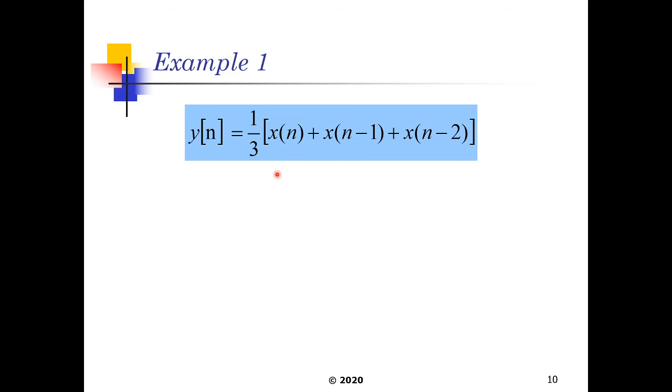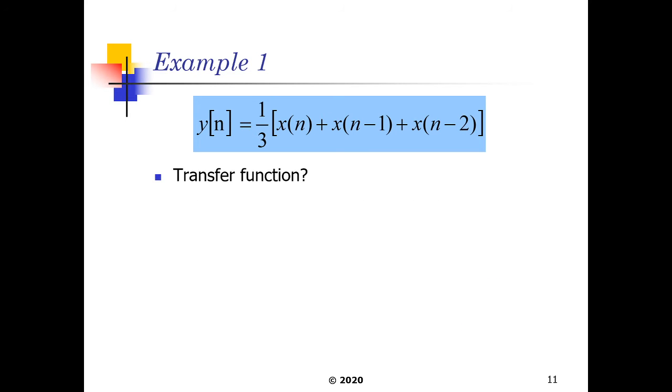The next question we want to ask is for this moving average filter, what is going to be the frequency response? So the transfer function for this moving average filter is basically a direct transfer, because we have delays here from x of n going from n equal to 0 to n minus 2. So we could transfer this accordingly straight just by visually watching it. x of n will transfer to 1, the first delay is z to negative 1, and the second delay is z to negative 2.